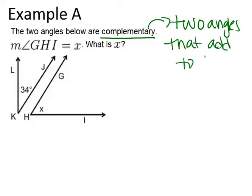So in this first example, it says the two angles below are complementary. The measure of angle GHI equals x, what is x? So because the two angles are complementary, it means that the 34 degrees and the x degrees has to add up to 90.